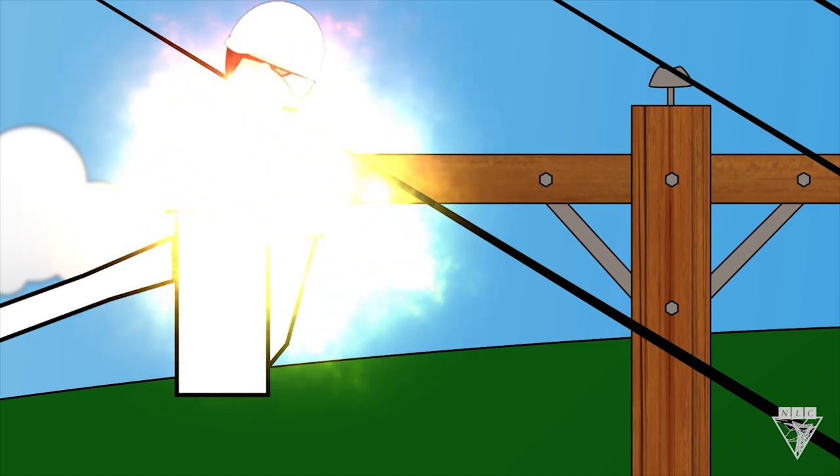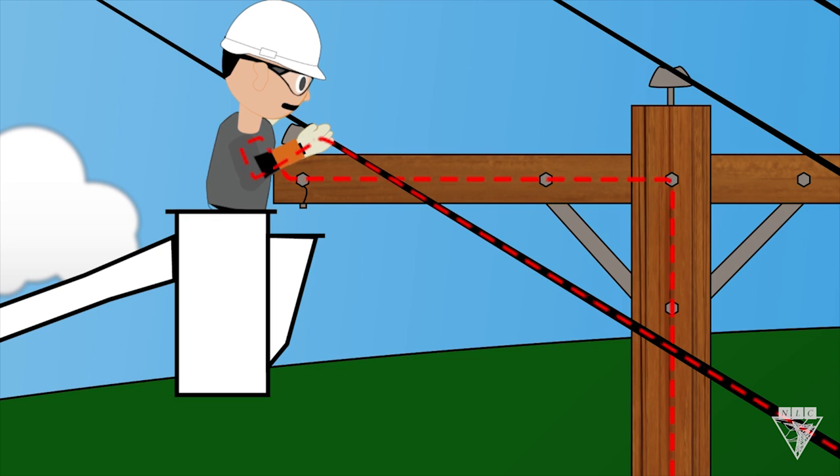If he contacts the cross arm while working on the phase, there will be a path for current to flow through his body to ground, which will result in a serious injury or death.